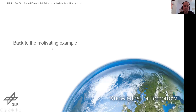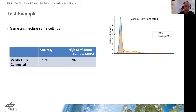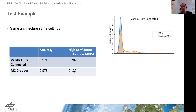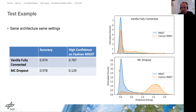So there is a drawback of course. Going back to the motivating example: our standard fully connected neural network had an accuracy of 97.4 percent, and on 79 percent of the Fashion MNIST dataset our network still had a very high confidence. Comparing this to this method — often referred to as MC Dropout — we have pretty much the same accuracy (the difference could just be random initialization or training variance), but we already see here that the high-confidence prediction rate on the Fashion MNIST dataset is a lot lower: only 13 percent of the Fashion MNIST samples caused a high-confidence prediction.